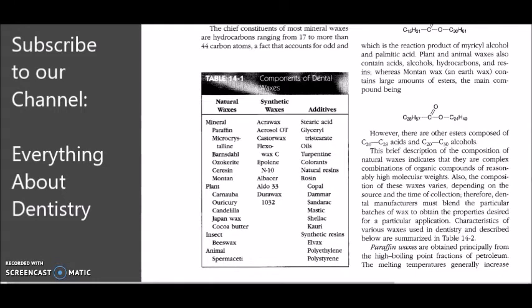In natural source or natural waxes, you can subdivide it into four categories. The waxes may have a mineral origin, plant origin, insect origin, or animal origin.